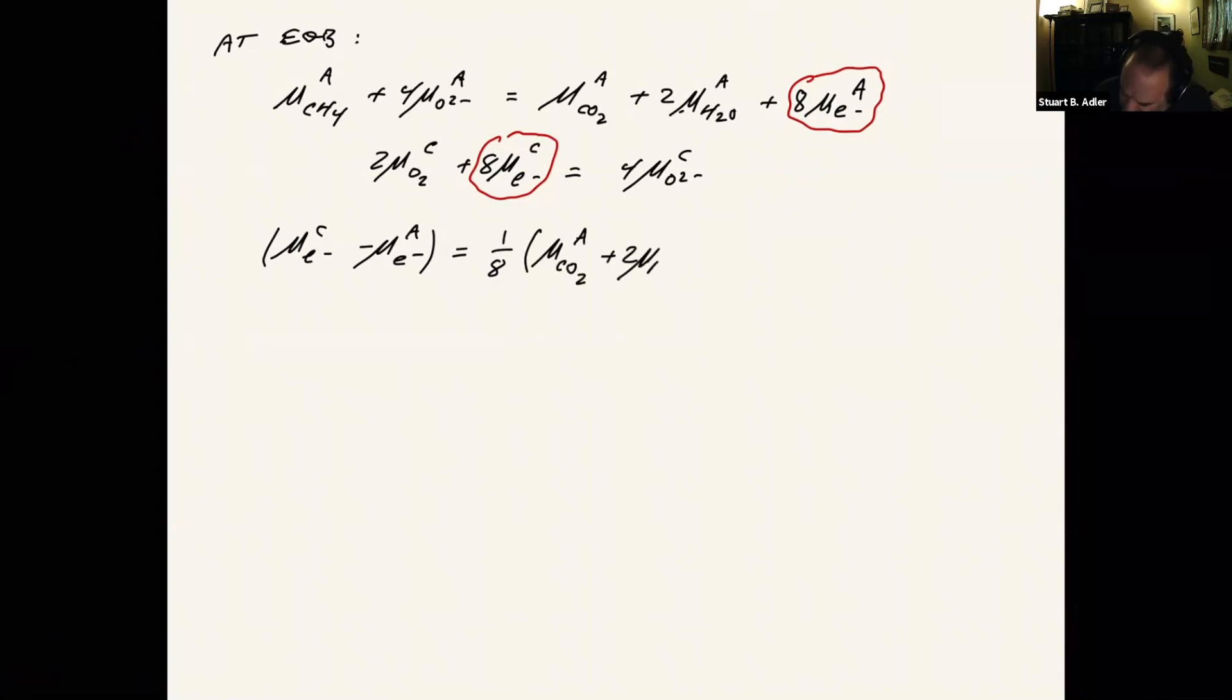And then we're multiplying that by mu CO2 at the anode, plus two mu H2O at the anode, minus mu CH4 at the anode, minus mu O2 at the cathode. And then there'll be one additional term, which is one half times mu of O2 minus, minus mu O2 minus, between the cathode and the anode side. So that last term represents the difference in the chemical potential of the ion between the two sides of the membrane. So on one side of the membrane, you might have a different ion chemical potential than the other. And so that difference might persist.